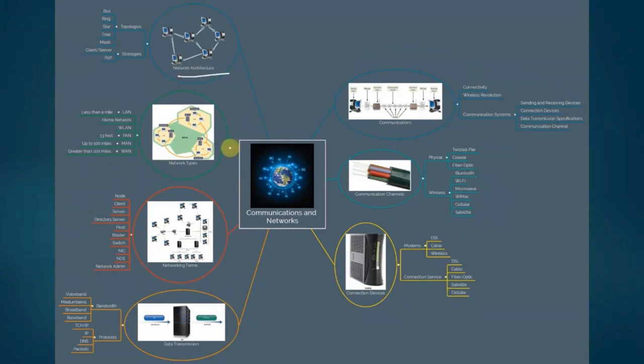Next, we have what's known as network architecture. Network architecture describes how a network is arranged and how resources are coordinated and shared. How they're arranged in terms of a subcategory called topologies and how resources are shared in terms of our subcategory called strategies. In terms of topologies, how they're arranged, you can have a bus topology where you simply have a bus and then you have your nodes laid out like so.